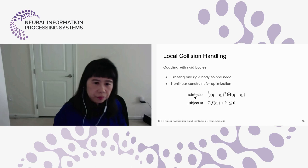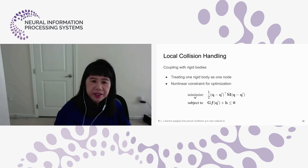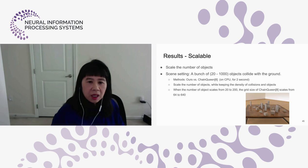We treat the rigid body as one node, which is a bit different from the earlier work with purely deformable bodies. We have a set of linear constraints for the optimization, subject to the same KKT conditions at optimal points. The full mathematical derivations and formulations can be found in our ICML paper this year.